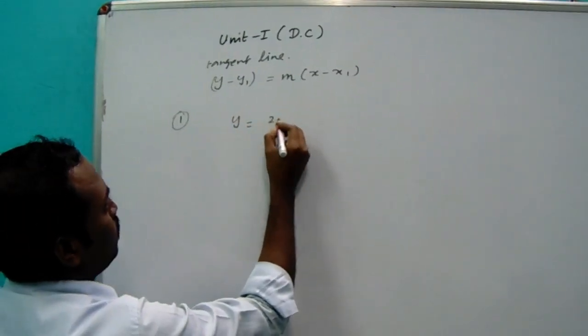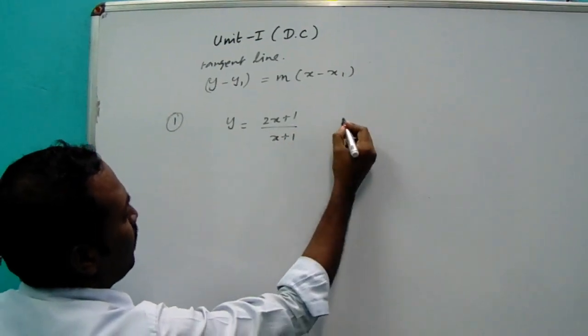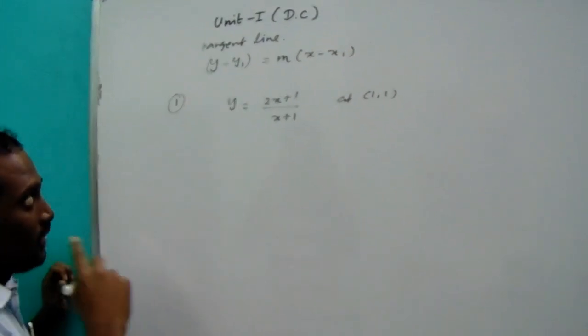Y is equal to 2x plus 1 divided by x plus 1. At the point 1,1. Tangent line. What is the tangent line?